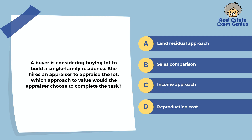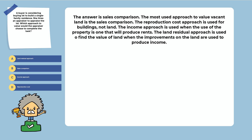A buyer is considering buying a lot to build a single family residence and hires an appraiser to appraise the lot. Which approach to value would the appraiser choose? Land residual approach, sales comparison, income approach, or reproduction cost. The answer is sales comparison. The most used approach to value vacant land is the sales comparison. The reproduction cost approach is used for buildings, not land. The income approach is used when the property will produce rents. The land residual approach is used to find the value of land when improvements produce income.